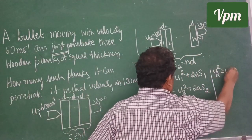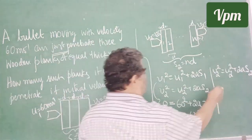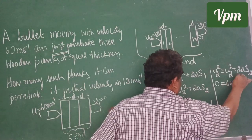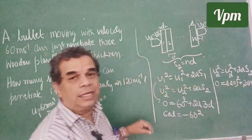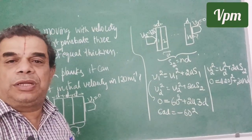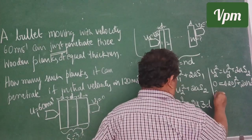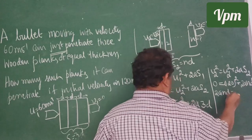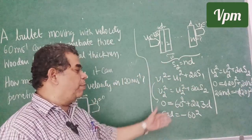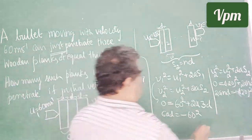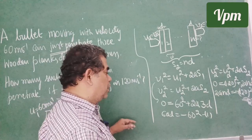Similarly, for the second situation: v₂² = u₂² + 2a·s₂. Substituting: 0 = 120² + 2a·(n·d), which gives 2and = −120². Now, by dividing equation 1 by equation 2, we can easily find n.